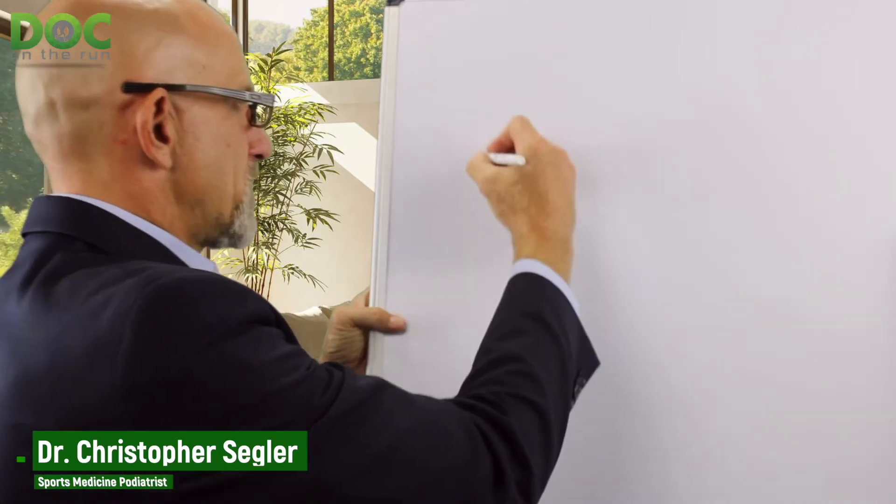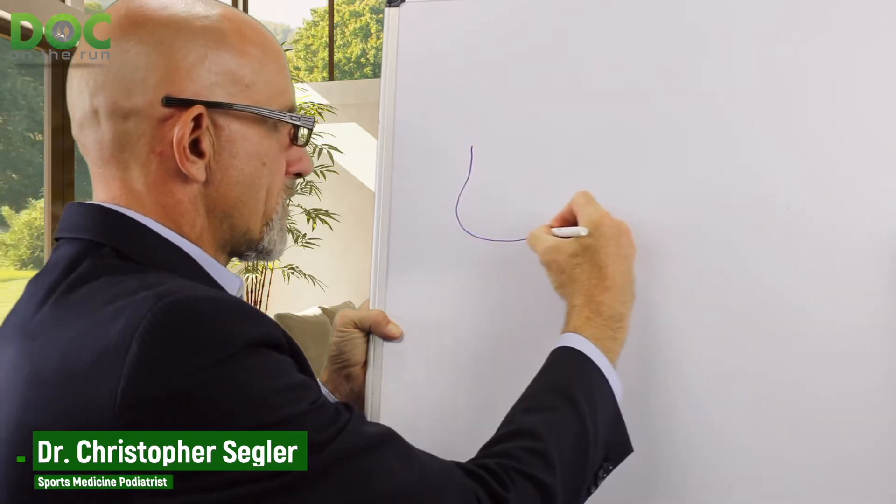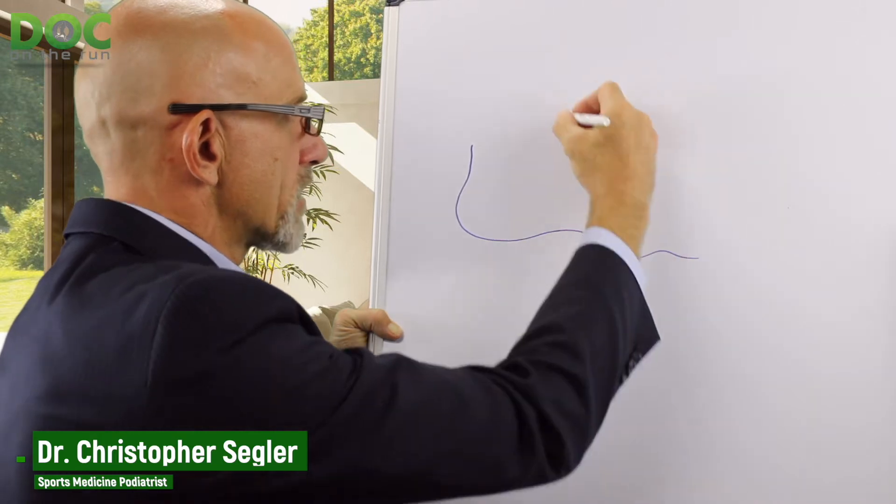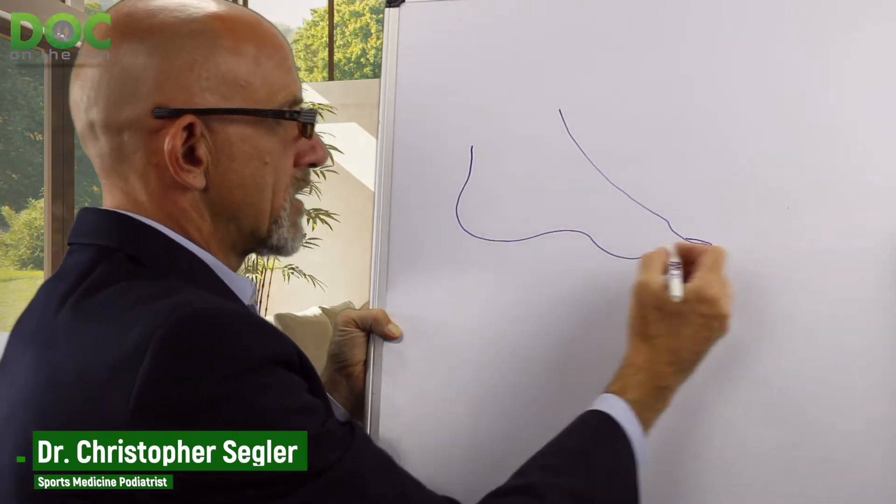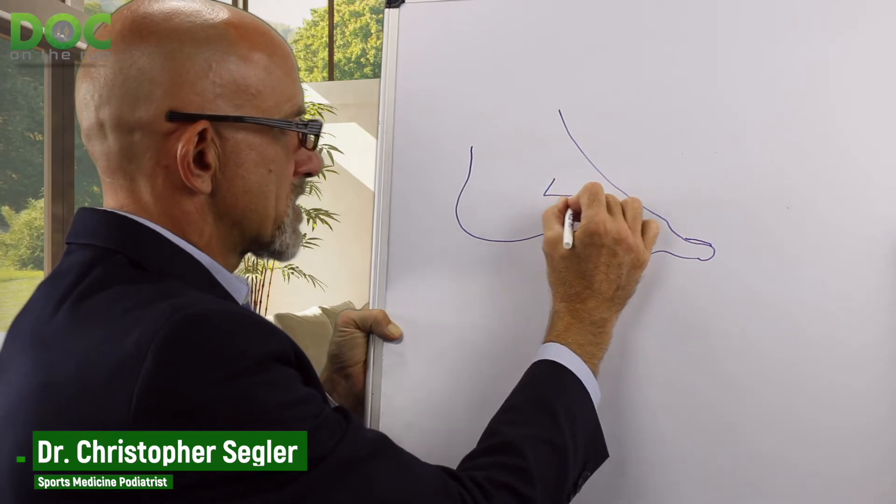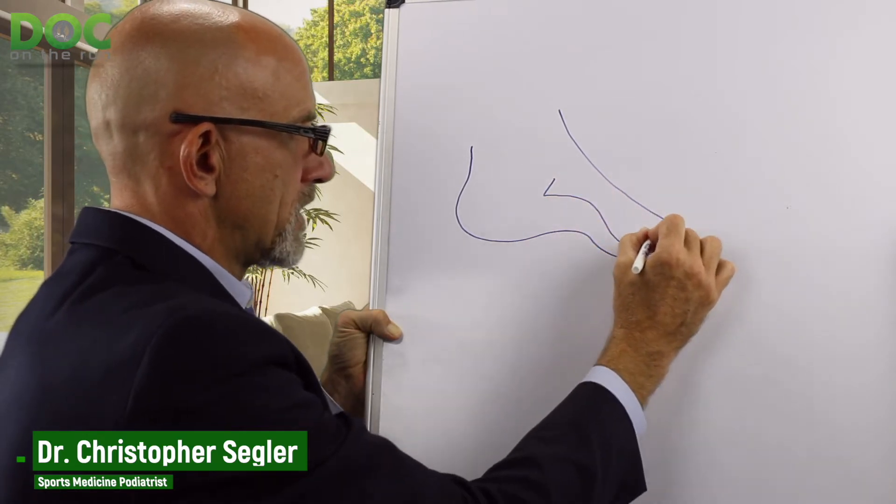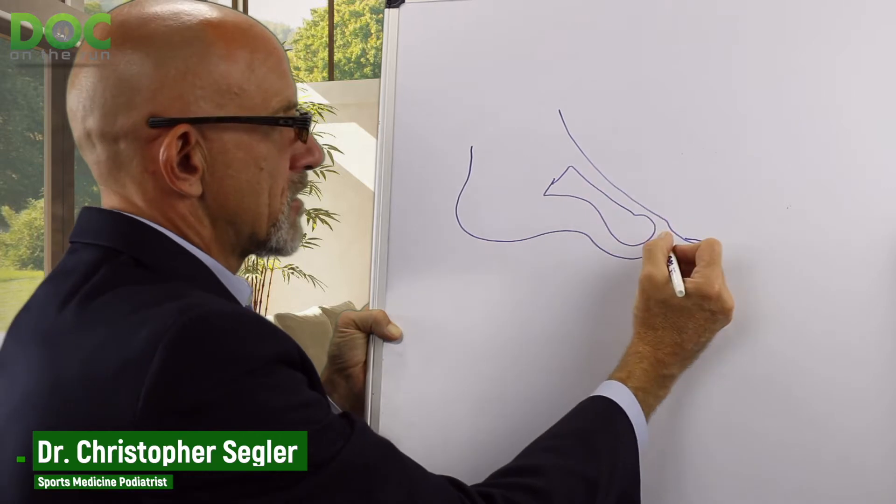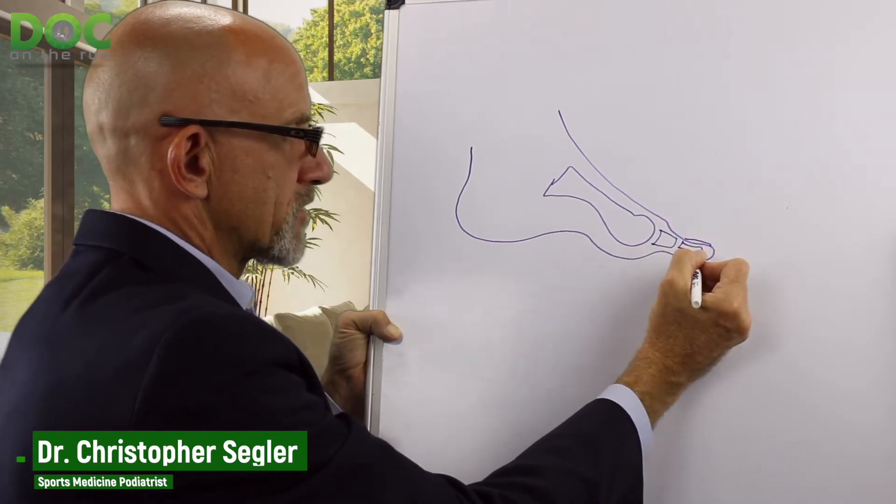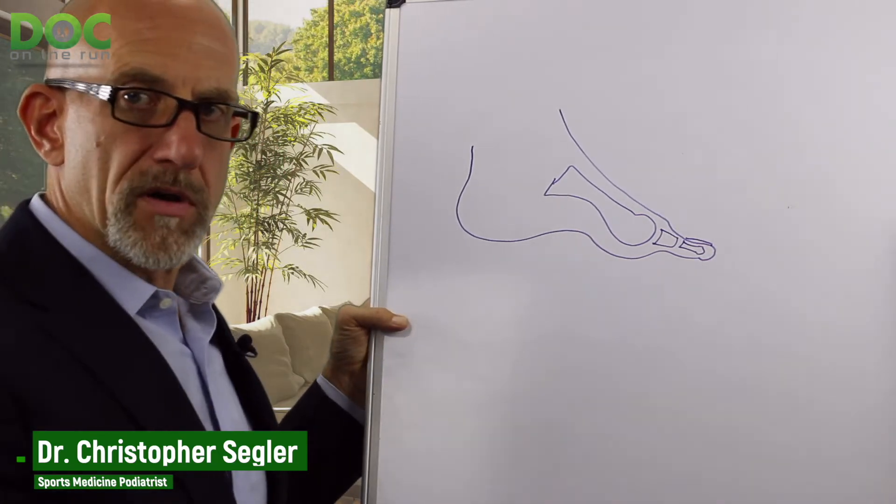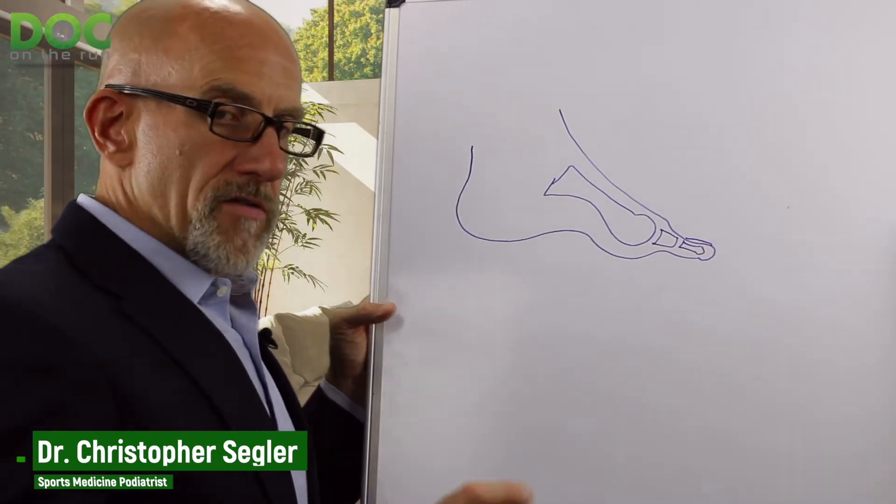Hallux means big toe. When we look at your foot and you look at the big toe joint, when you think about the mechanics of the joint, it'll make a lot of sense. You have the metatarsal bone, the first metatarsal, which goes down to the big toe joint. And you have the proximal phalanx bone, which is smaller, and then you have the distal phalanx bone. It's not really that important in this equation, but it's part of it.